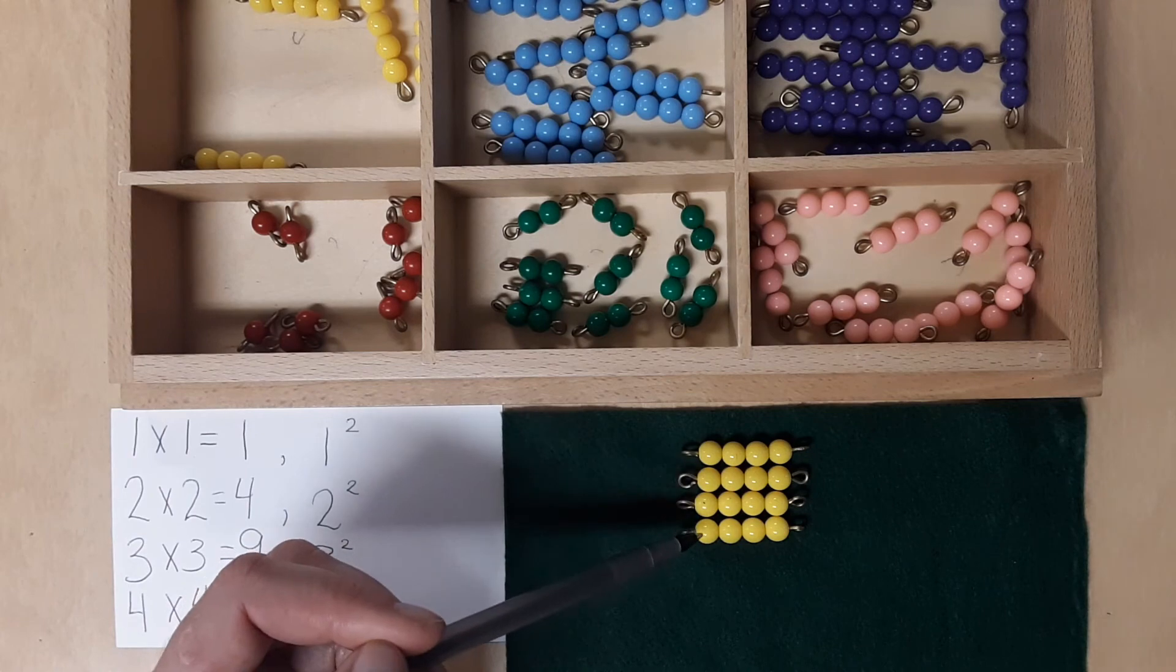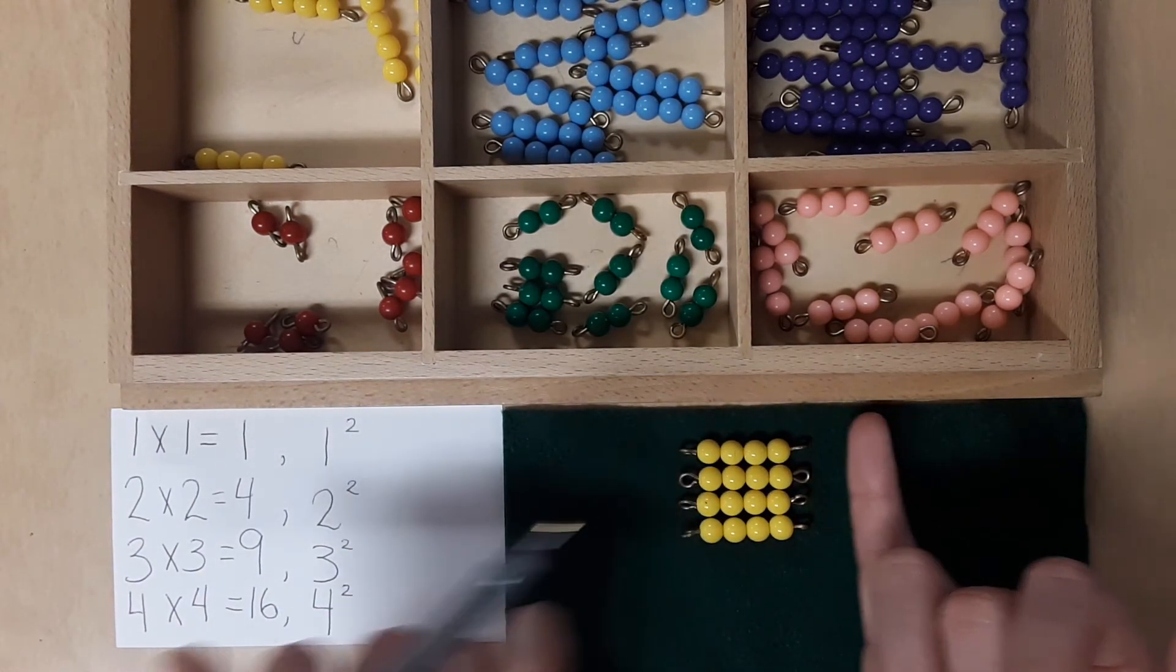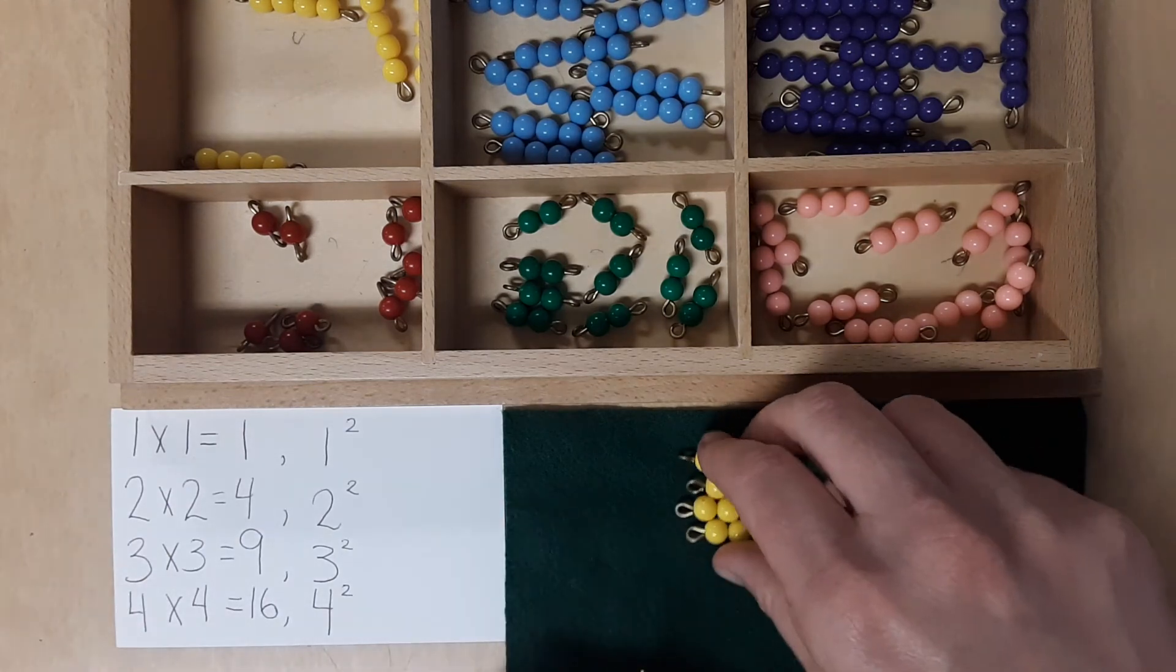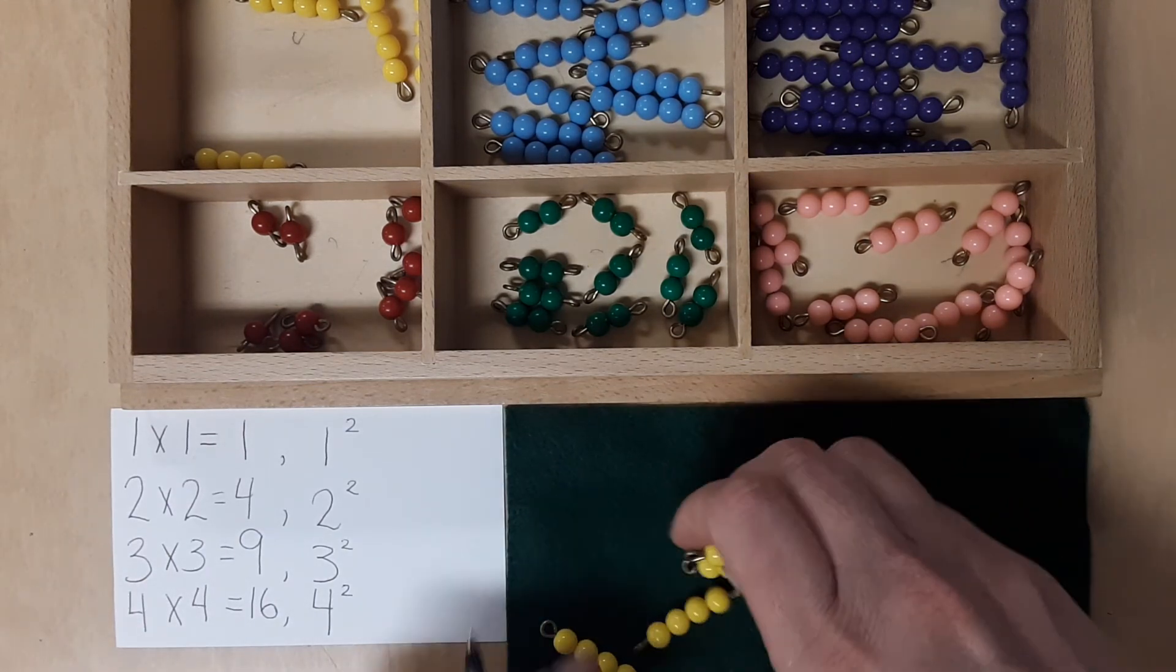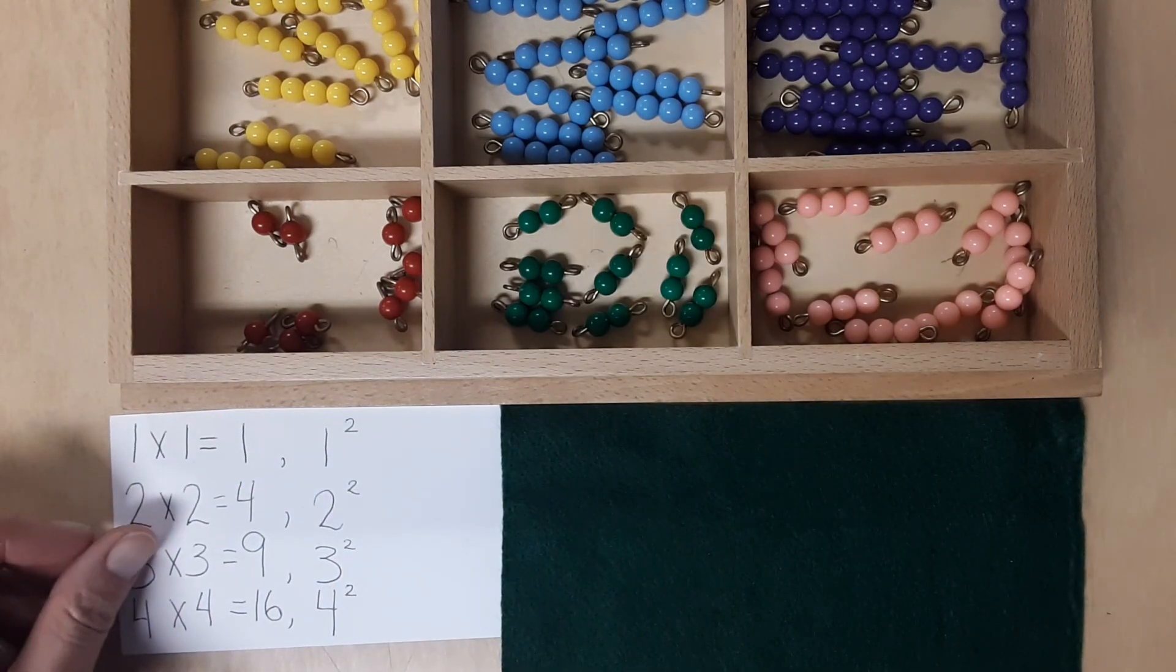Oh, and what shape do we have here? Yeah, another square. Alright, so you can continue and do the rest of these on your own and record them on paper. Alright, see you next time.